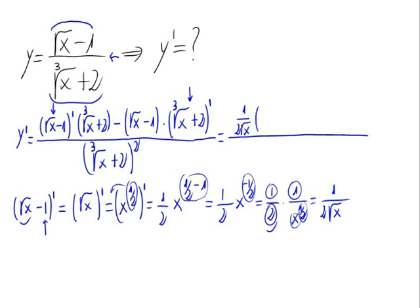So let's write this derivative up in the formula: we have 1 divided by 2 times the square root of x, times the denominator which is the cube root of x plus 2, minus the numerator — the square root of x minus 1 — times the derivative of the denominator.